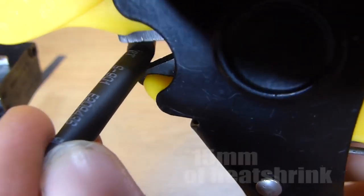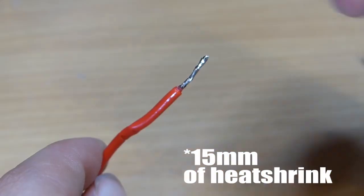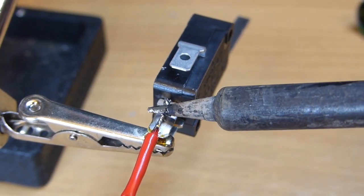Cut off about 5mm of heat shrink and slip it over the wire. Then, place the wire onto the terminal and heat it up to melt them together.